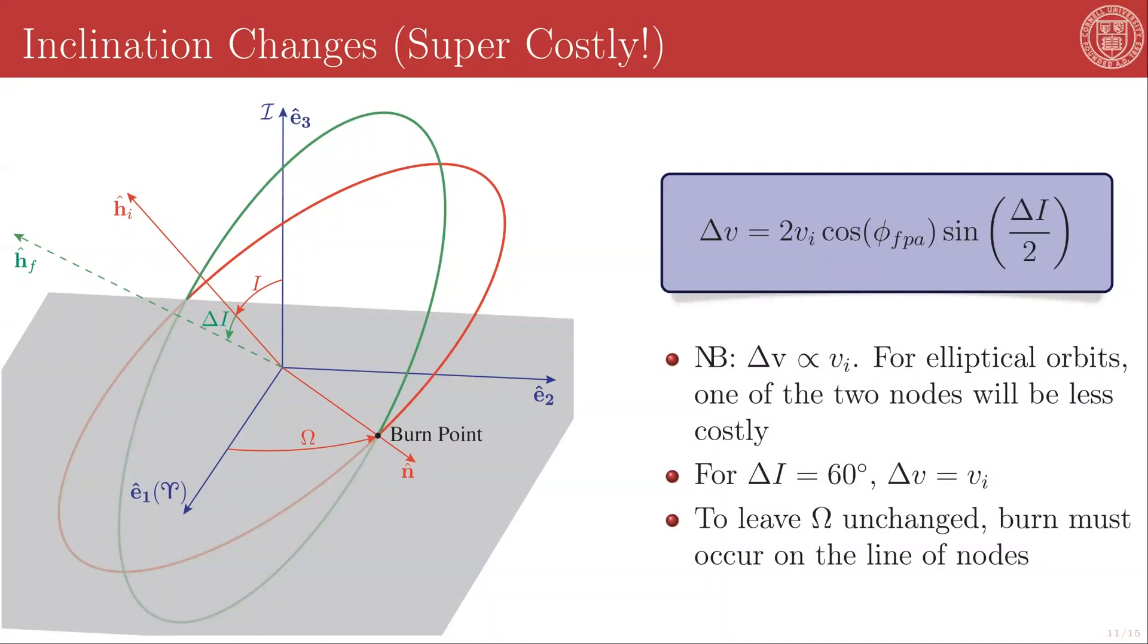We can also think about changing the orientation of our orbits, either individually changing one of the three Euler angles or changing groups of those angles. We'll start with inclination changes. The first thing to consider with inclination is that these are incredibly costly maneuvers.